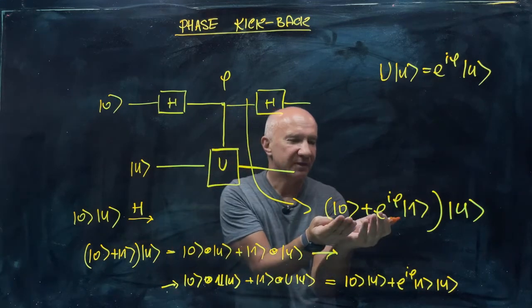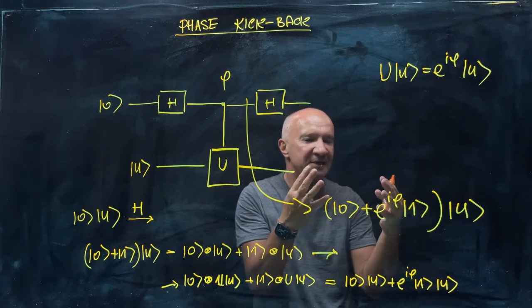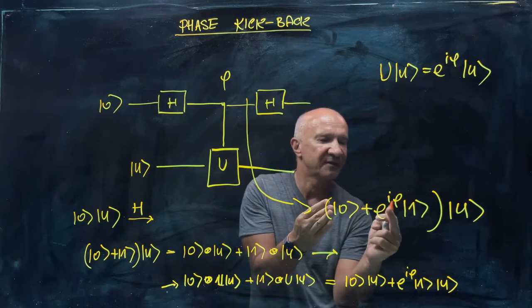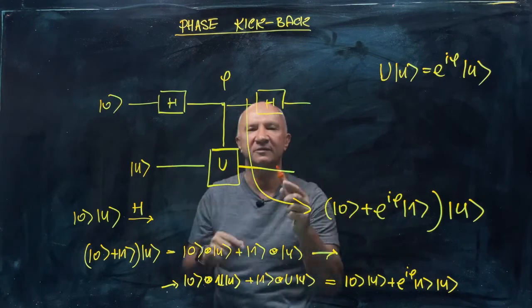So look at this, the phase gate, right? So essentially, what happened now is we introduce the phase factor e to the i phi in front of one. So it's like a phase gate. So then you know what's going to happen later.